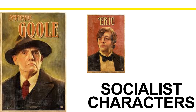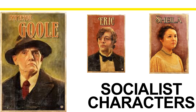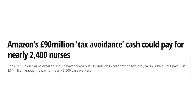Eric is quietly socialist at the start of the play. We have the stage direction that he is 'half shy, half assertive,' and that assertiveness refers to his willingness to take on his father's capitalist views and argue his opinion. As the play progresses, his assertiveness increases and he is openly arguing with his parents and telling them they are wrong by the end of the play. Sheila almost converts from capitalism to socialism because of the inspector's influence. She is quite materialistic at the start — excited about her engagement ring — and openly admits to using her influence to get Eva Smith fired. By the end of the play, she is very apologetic, realises what she did was wrong, and says she would never do it again.